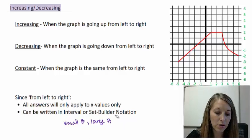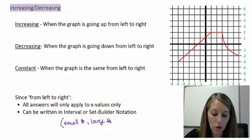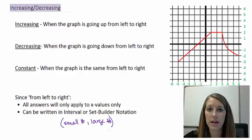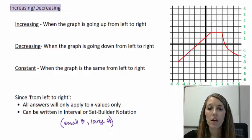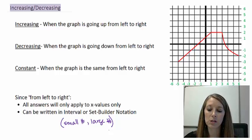Our intervals are going to be split up naturally by increasing, decreasing, and constant. So if we have endpoints, those endpoints cannot be both increasing and decreasing at the same time. Therefore, we do not include any endpoints in these intervals. Hopefully this makes more sense when we look at the example.